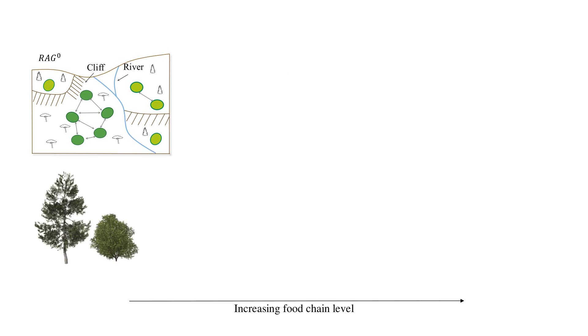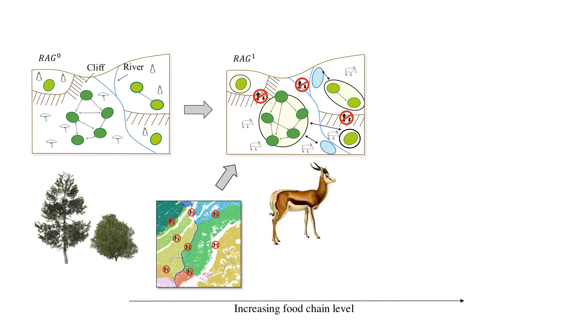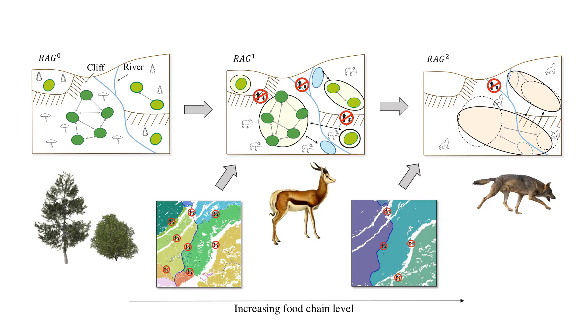We can then recursively compute the resource access graph up to the top of the food chain. At a given level, the species compete for resources.